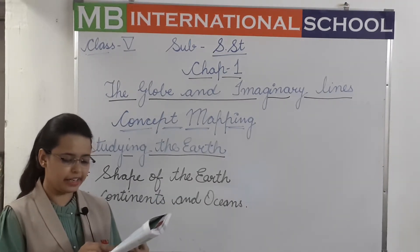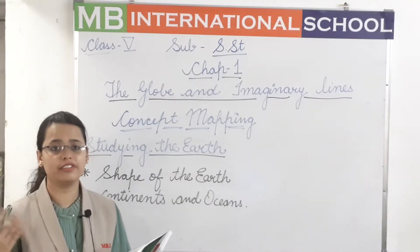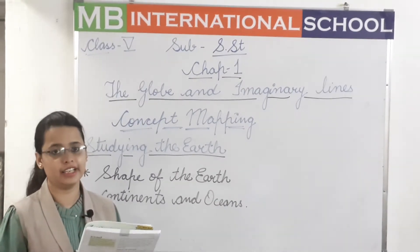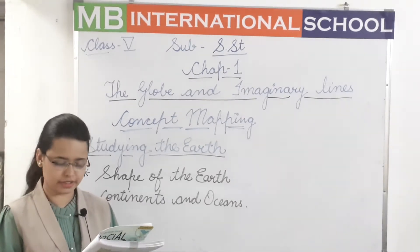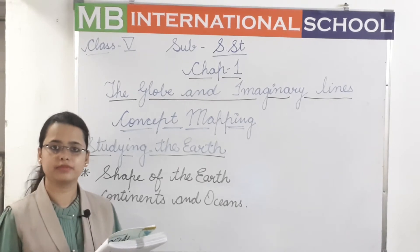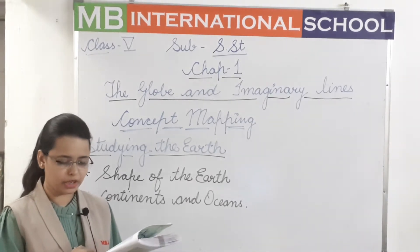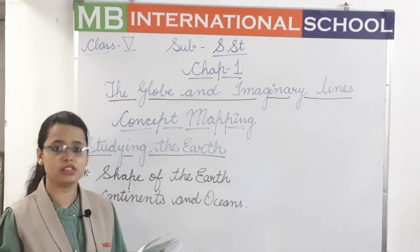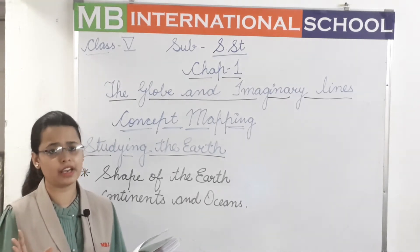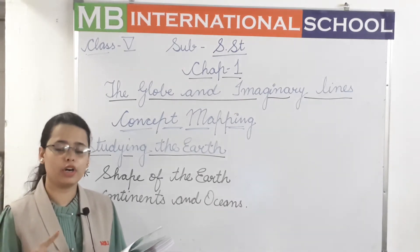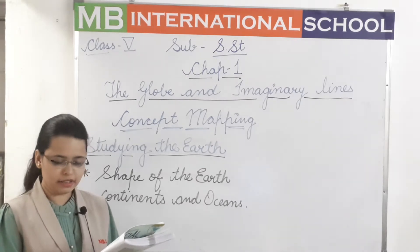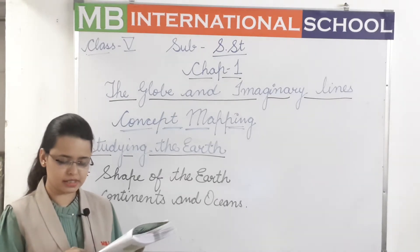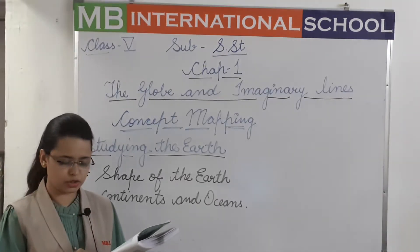Each continent is divided into countries. Our country India is the seventh largest country in the world, and it is located in Asia. The large water bodies surrounding the continents are called oceans. There are five major oceans in the world: the Pacific Ocean, Atlantic Ocean, Indian Ocean, Southern Ocean, and Arctic Ocean.